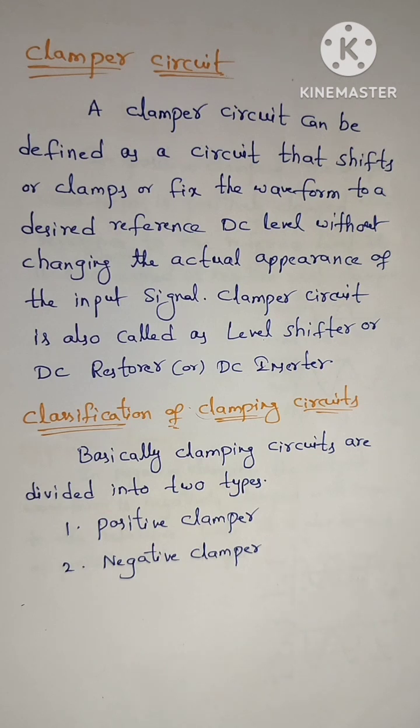Classification of clamping circuits: basically, clamping circuits are divided into two types — positive clamper and negative clamper.